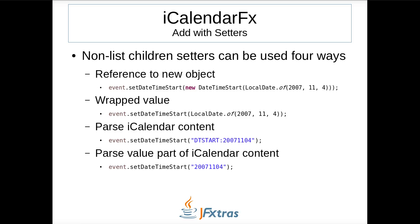All non-list children have four overloaded setter methods. The first option is the most explicit — pass a reference of a new object. For example, add a DateTimeStart property to an event by creating a new DateTimeStart object. The second involves passing only the value the DateTimeStart object wraps. The third is parsing iCalendar content text. The fourth is parsing the value portion of iCalendar content text, which is only available if the element has no children itself, such as a property with no parameters. All four ways have the same end result.